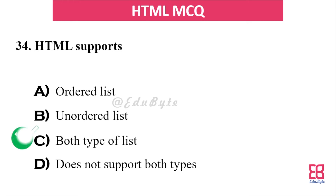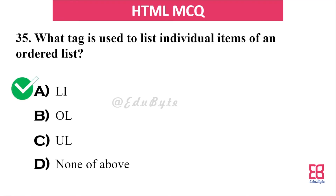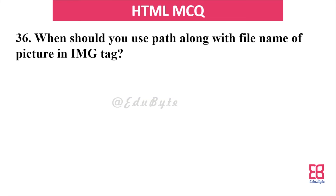Question thirty: what does HTML support regarding lists? HTML supports both ordered list and unordered list types. Question thirty-one: what tag is used to list individual items in an ordered list? The correct answer is `<li>` — the li tag represents a list item.